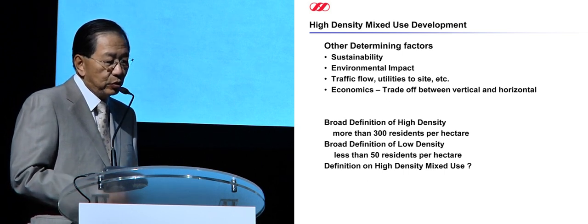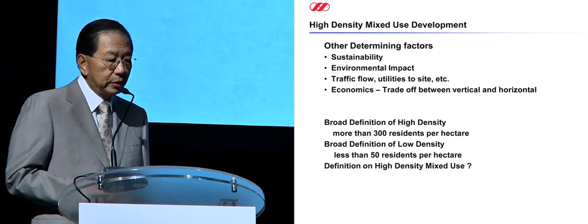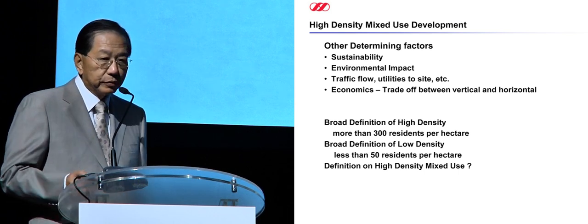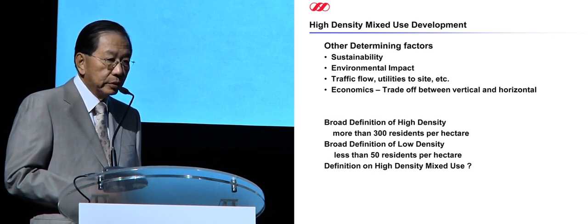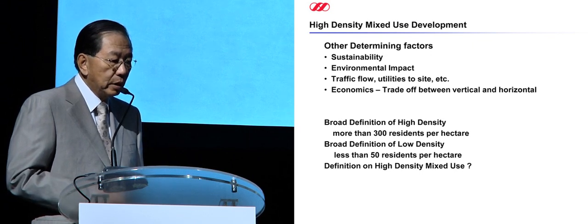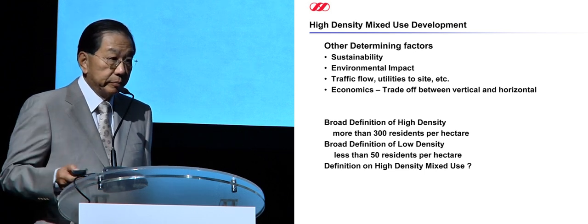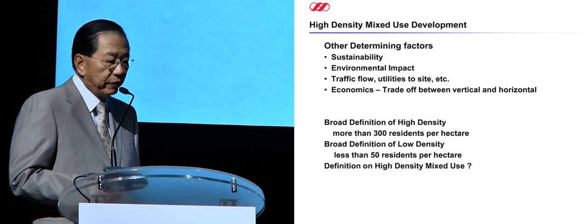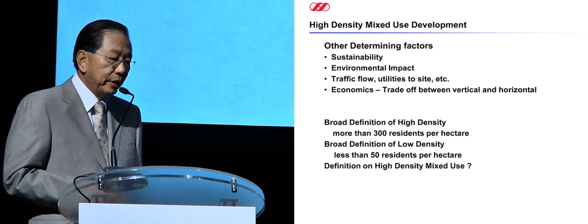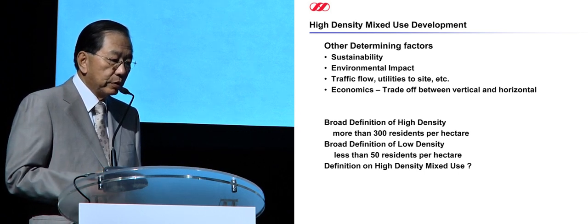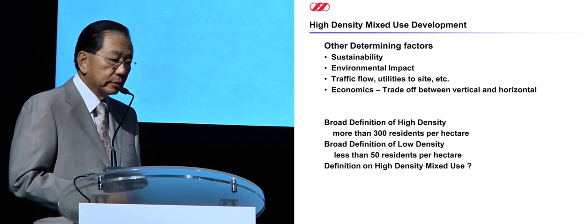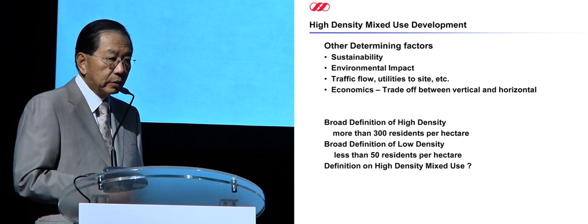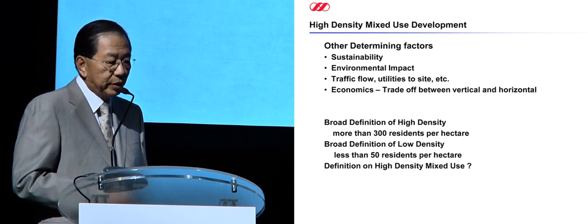High-density mixed-use development has many determining factors. Sustainability is always the most important, followed by environmental impact, traffic flow, utility availability, and the economics trade-off between high-rise and low-rise — sometimes it costs more to build high-density. In planning terms, we define high-density as 300 residents per hectare and above. Low density is less than 50 residents per hectare.